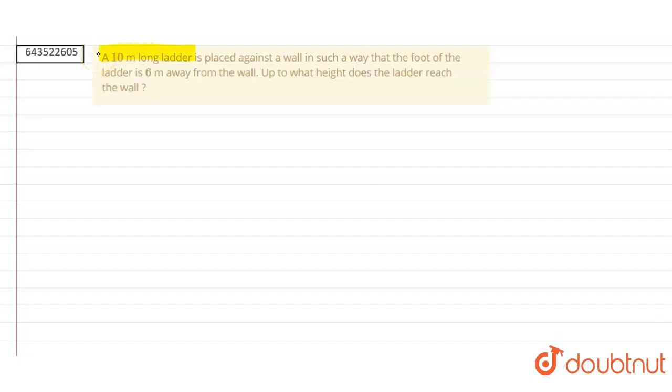in such a way that the foot of the ladder is 6 meters away from the wall. Up to what height does the ladder reach the wall? So let's start by making the diagram for the question.